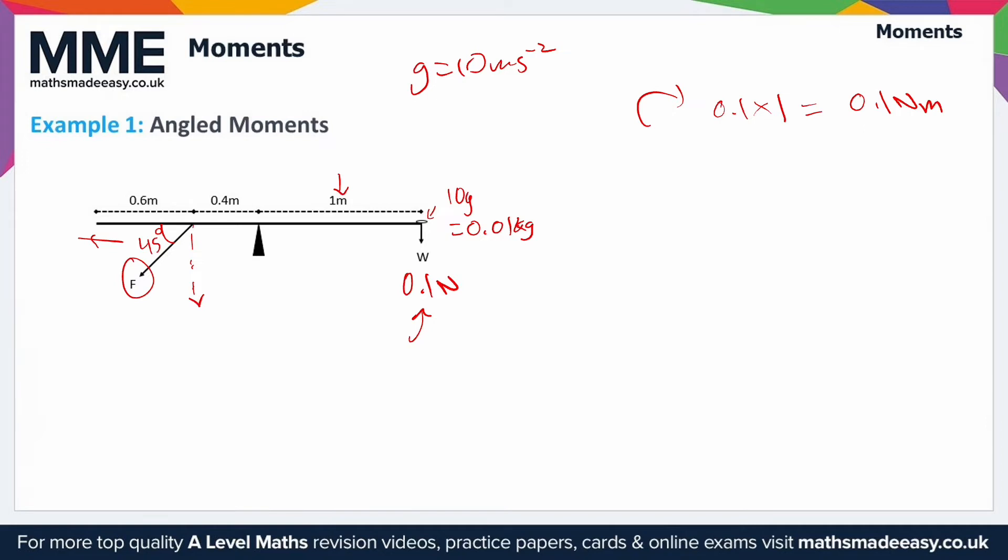That's our clockwise rotation and if this is in equilibrium we already know that the anti-clockwise moment has to be the exact same. So we just need to figure out what component of this force is acting vertically.